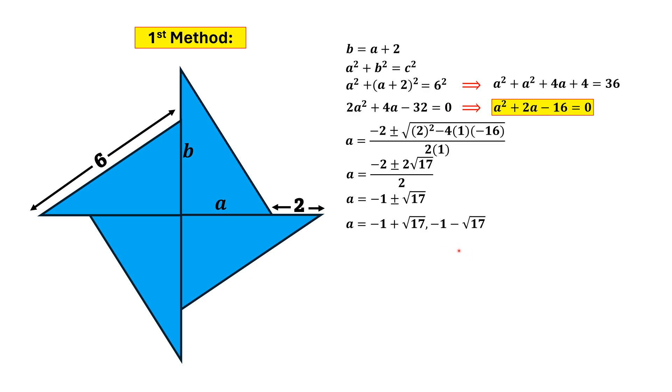The root -1 - √17 is a negative quantity, and we are very much clear that this length a is a length, and length can never be negative. So the root -1 - √17 is rejected, and hence the accepted value of a is √17 - 1.